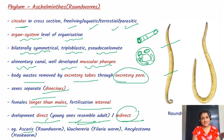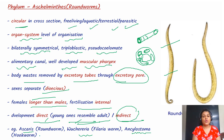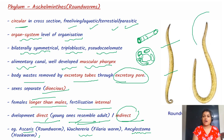Examples are Ascaris, which we know as the roundworm, Wuchereria, that is the filarial worm, and Ancylostoma, or the hookworm.